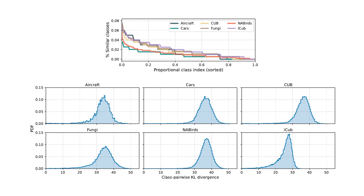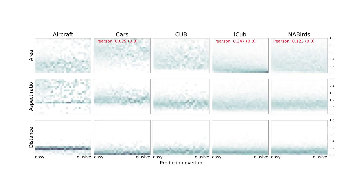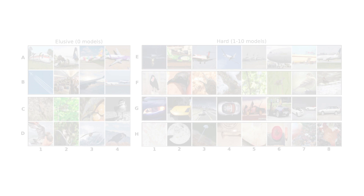We also show the percentage of class pairs that are similar within each dataset, as well as the full distributions of pairwise KL divergence, which are remarkably similar across datasets. In addition, we analyze several spatial properties of the images, estimated using statistics of the bounding boxes — specifically object size, aspect ratio, and distance from the center of the image versus prediction overlap. We find little correlation in most cases, except for object size and only on certain datasets. The fungi dataset does not contain bounding boxes and is excluded.